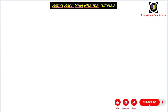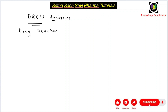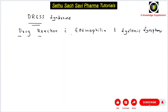So what is DRESS syndrome? DRESS is the abbreviated form of Drug Reaction with Eosinophilia and Systemic Symptoms. Taking the first letters — D, R, E, S, S — gives us the acronym DRESS syndrome.